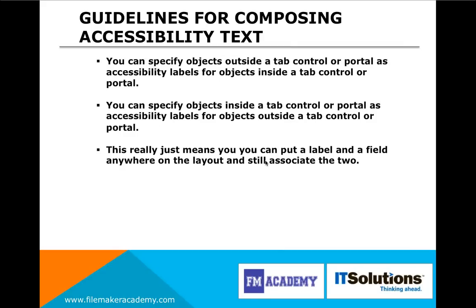Don't label anything that's not actually going to be used and interacted with by the user. FileMaker made a note that you can specify objects outside a tab controller or portal as accessibility labels, and vice versa. What this means is that you can have a label associated with a field that is anywhere else on the layout — it can be inside a tab, nested five tabs deep, or anywhere else. It might not always make visual sense, but it works the way FileMaker 12 is designed.